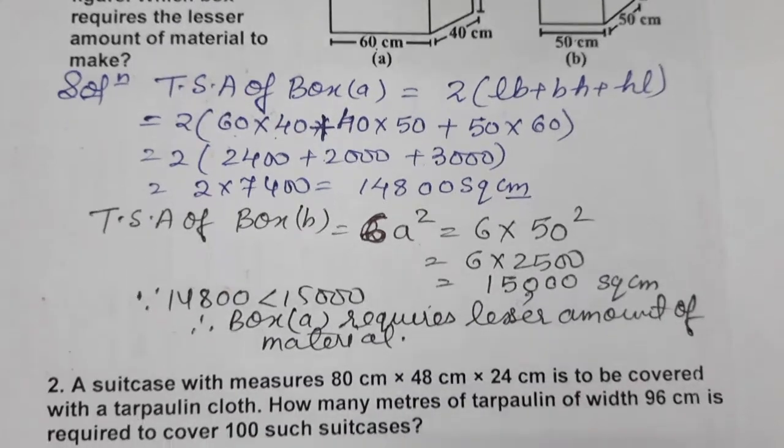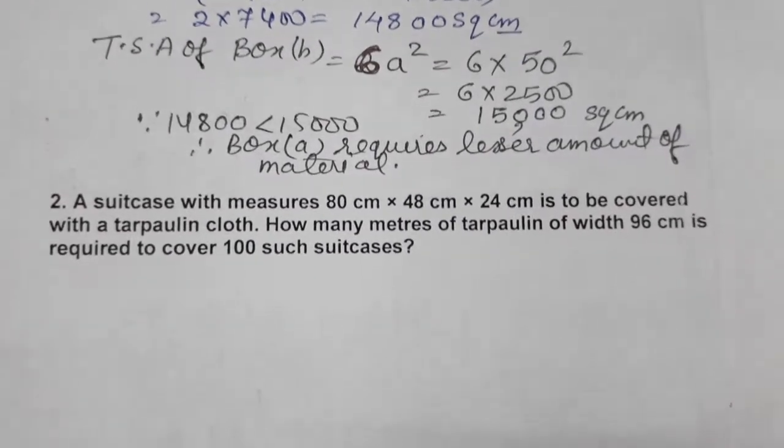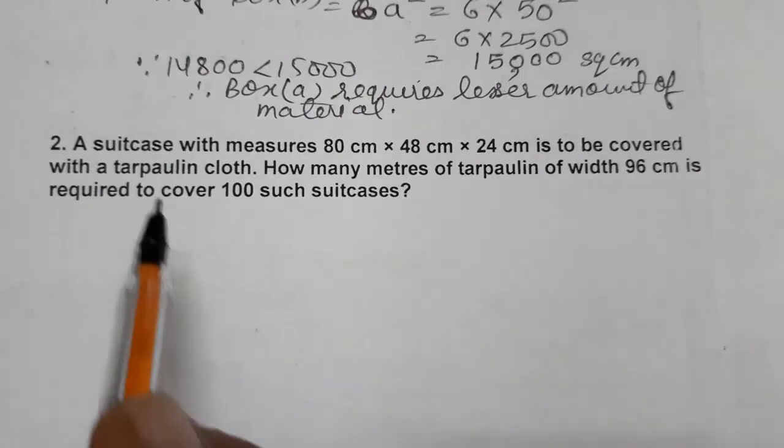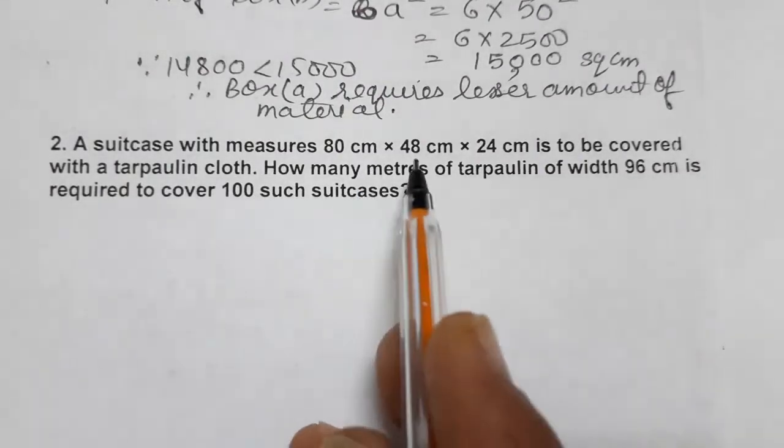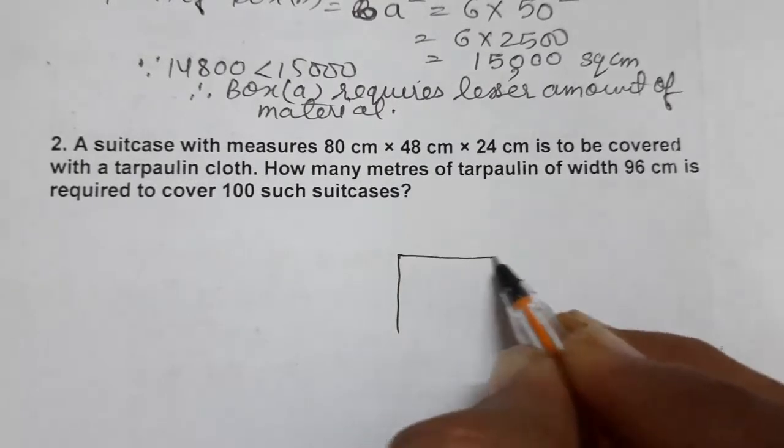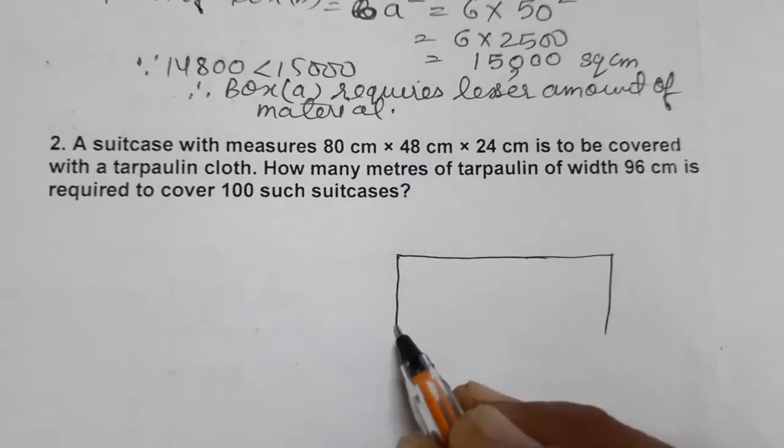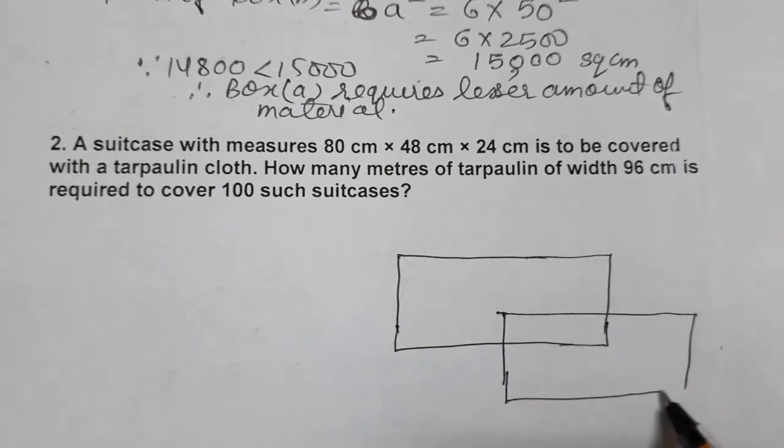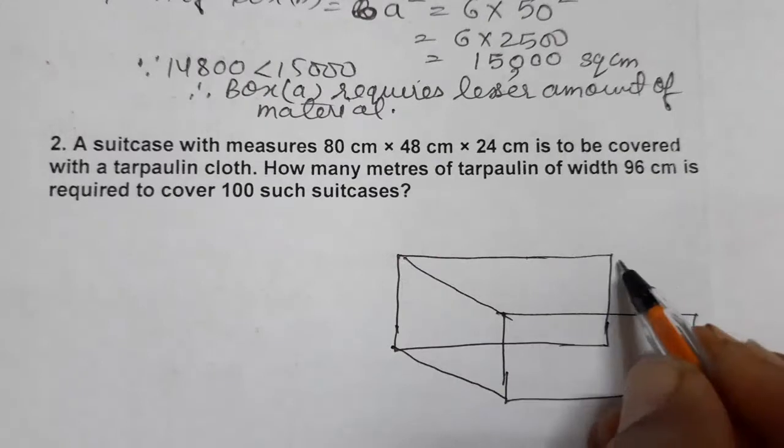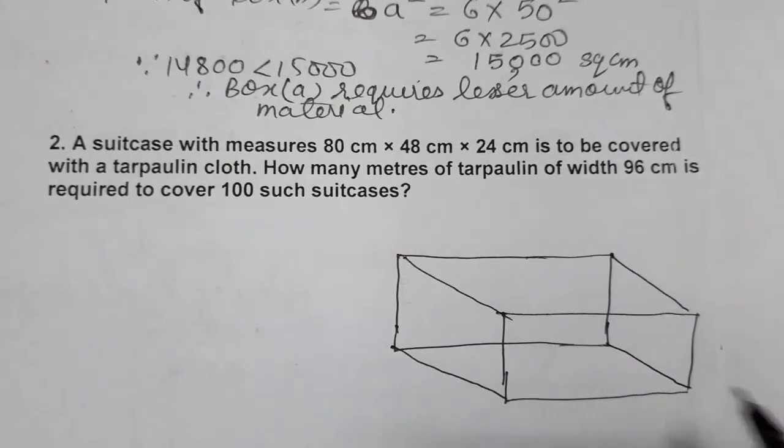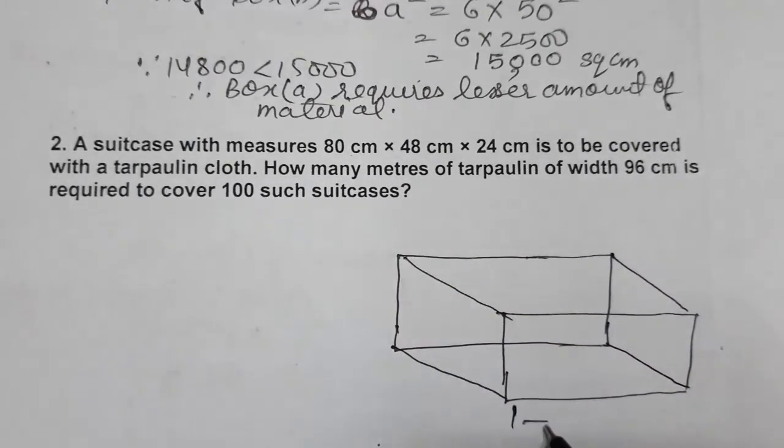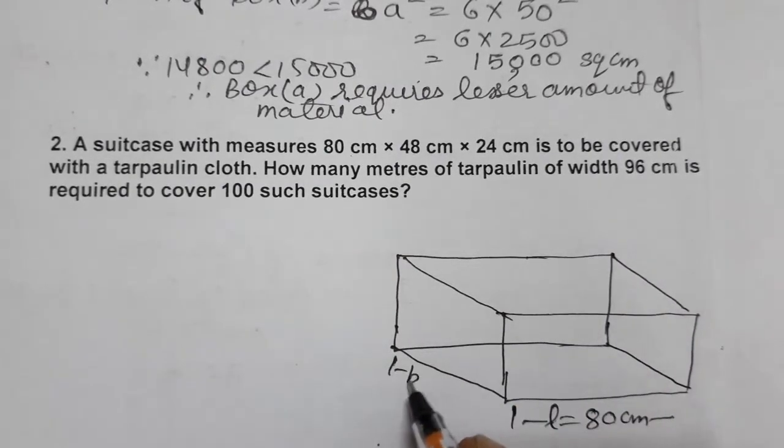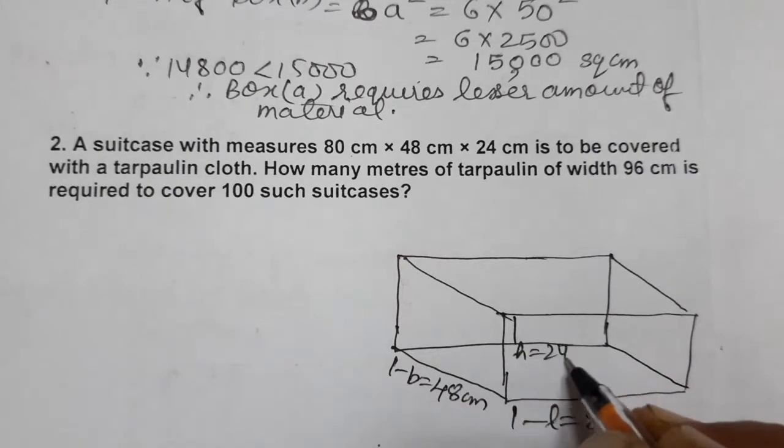Now we will do question number 2. A suitcase with measures 80 cm × 48 cm × 24 cm—one suitcase of cuboidal shape. Let's assume this is our suitcase: length is 80, breadth is 48, and height is 24.